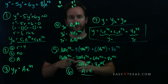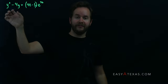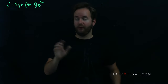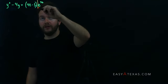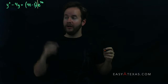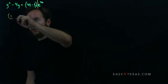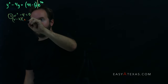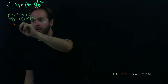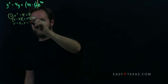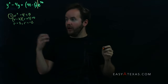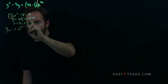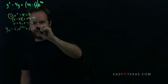Now I want to show you a problem where the characteristic polynomial has a root that matches the value of r from the right-hand side. Draw the vertical line between the polynomial and exponential part, then proceed with step 1. The characteristic equation is r² − 4 = 0, which factors into (r − 2)(r + 2) = 0, giving r equals 2 and r equals −2. The homogeneous solution is c1·e^(2t) + c2·e^(−2t).